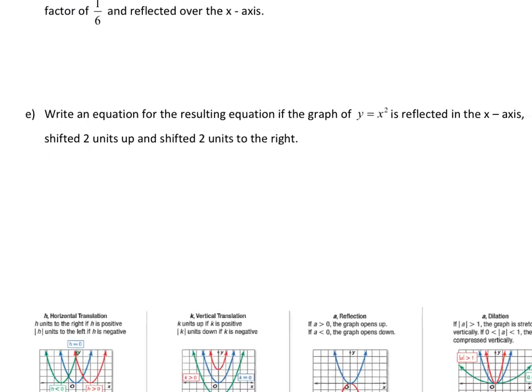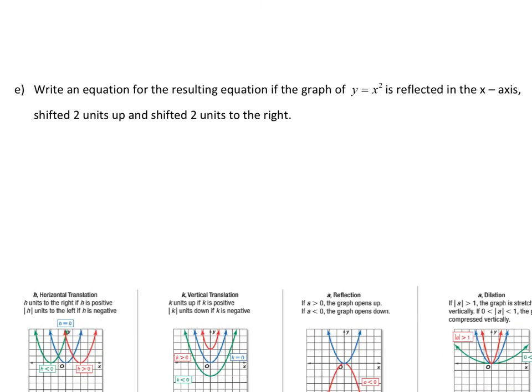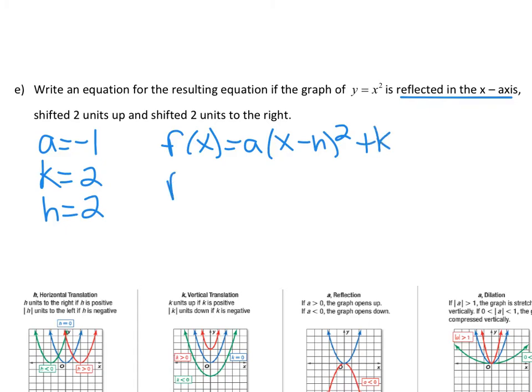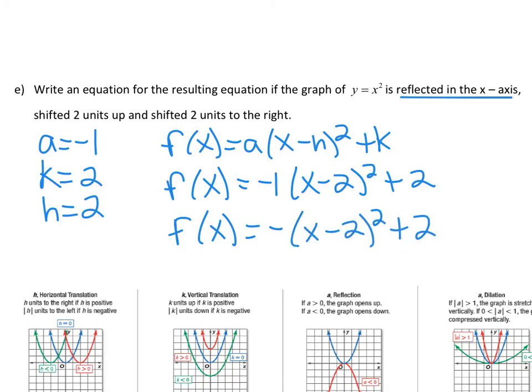Let's do one more. Let's look at letter E. Write an equation for the resulting equation if the graph of y equals x squared is reflected in the x-axis, so I know a equals negative 1. Shifted two units up, k equals positive 2. And two units to the right, which tells me h equals positive 2. f(x) equals a times (x minus h) squared plus k. f(x) equals negative 1 times (x minus 2) squared plus 2. You could keep it like that, or I don't like to have negative 1 in there. I just like the negative. And that is your vertex form.